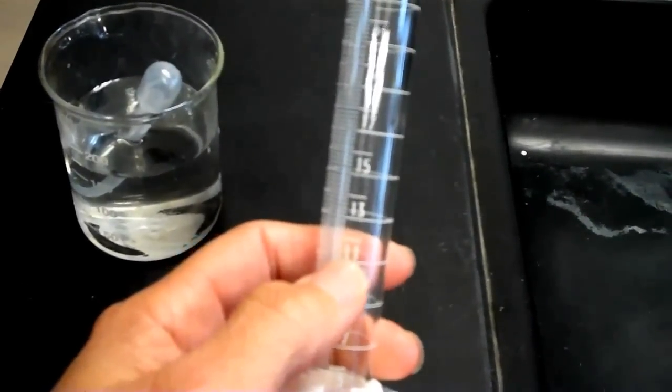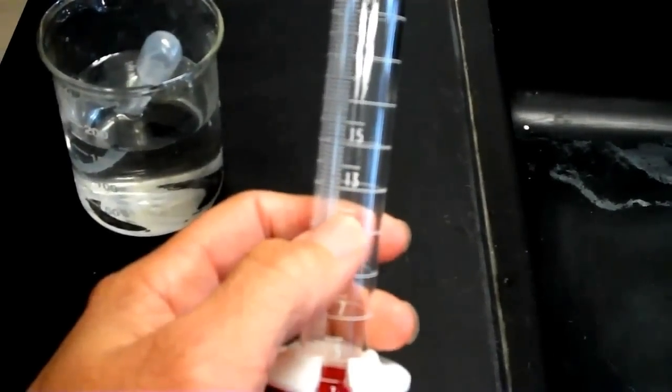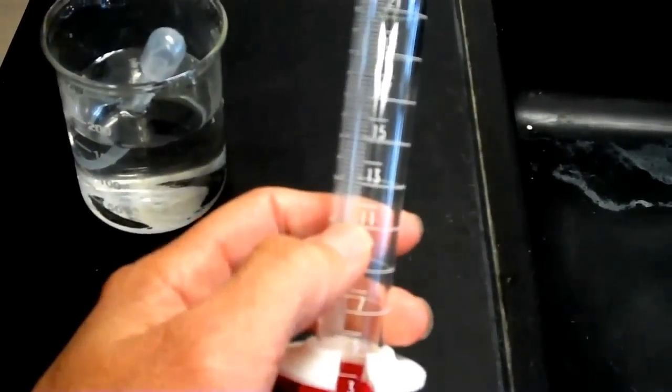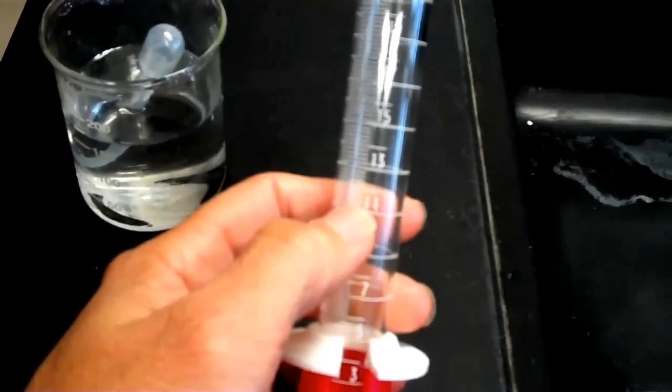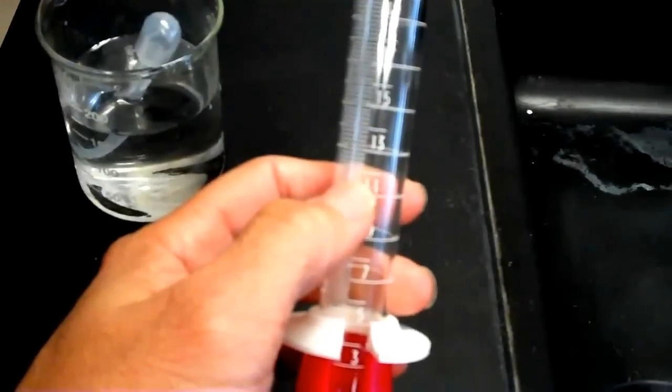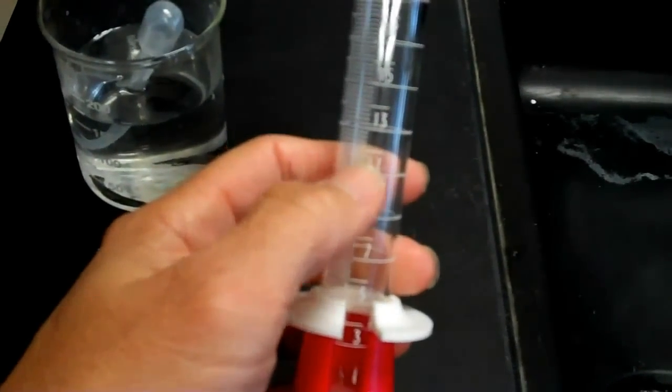On this one, it goes from 11 to 13, and in between that is 12. And so these smaller marks represent, this is 11.2, 11.4, 11.6, 11.8, and then 12, okay.